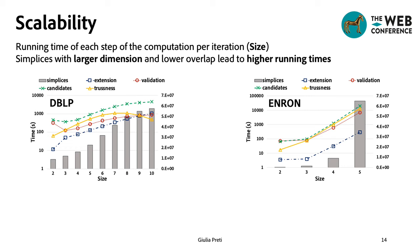In these charts, we can see the running time of our algorithm for two datasets, DBLP and Enron, and in particular, we can see the time required to perform each step of the computation and for each iteration.